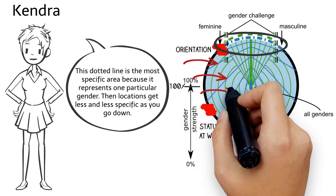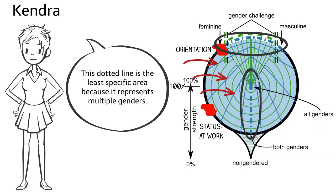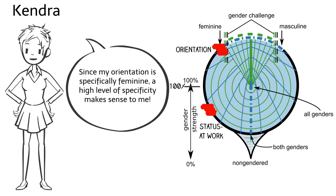Then locations get less and less specific as you go down. This dotted line is the least specific area because it represents multiple genders. Since my orientation is specifically feminine, a high level of specificity makes sense to me.